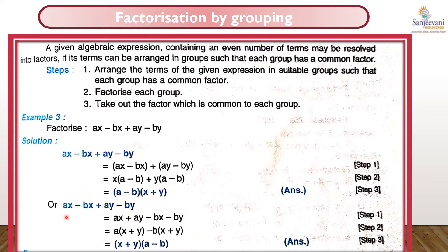Similarly, we can do it another way: instead of grouping x terms, we group a terms. So (ax + ay) comes together and (-bx - by) comes together. a is common in the first group giving (x + y), and -b is common in the second group giving (x + y). Now (x + y) is common, so the factors are (x + y)(a - b). In both cases you get the same answer.